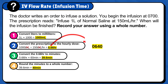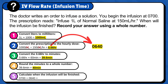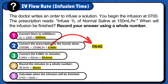Therefore, it will take 6 hours and 40 minutes to infuse 1 liter of normal saline at a rate of 150 ml per hour. Finally, calculate when the infusion will be finished: 0700 plus 0640 is 1340, or 1:40 p.m. It will be finished at 1340, or 1:40 p.m.